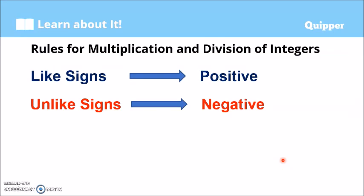Again, rules for multiplication and division of integers: when you have like signs, or same signs, the answer is positive. When you have unlike signs, the answer is negative. This is similar to the rules in addition and subtraction. When we perform operations — addition, subtraction, multiplication, and division — we always have to look at the signs of the integers. That's very important.